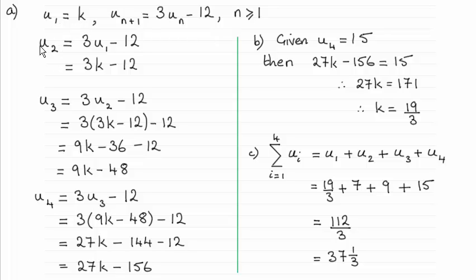So in order to find the second term, all I did was set n equal to 1. If n equals 1 you get u2 equals 3u1 minus 12, and we knew that u1 was k, so you just get 3k minus 12.